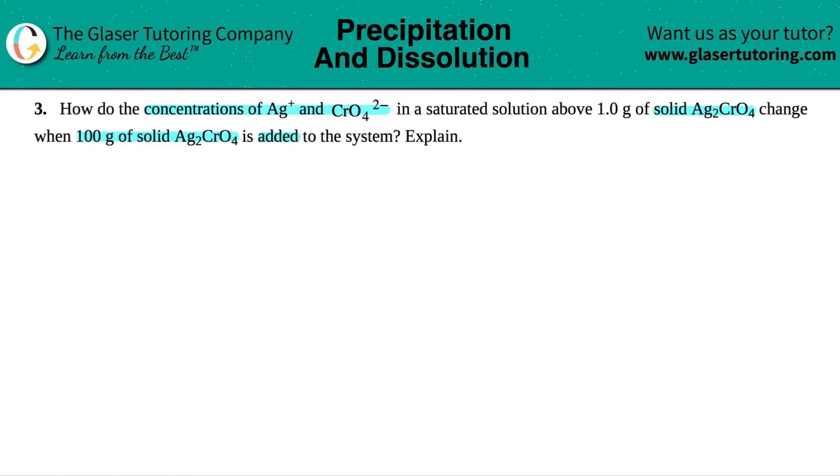So basically what's happening is it seems like we're adding some solid silver chromate, right? I believe this is silver one chromate. Does the name matter? Absolutely not. But we're adding 100 grams of the silver chromate and they're just asking how would that addition affect the change in the concentration of the ions?